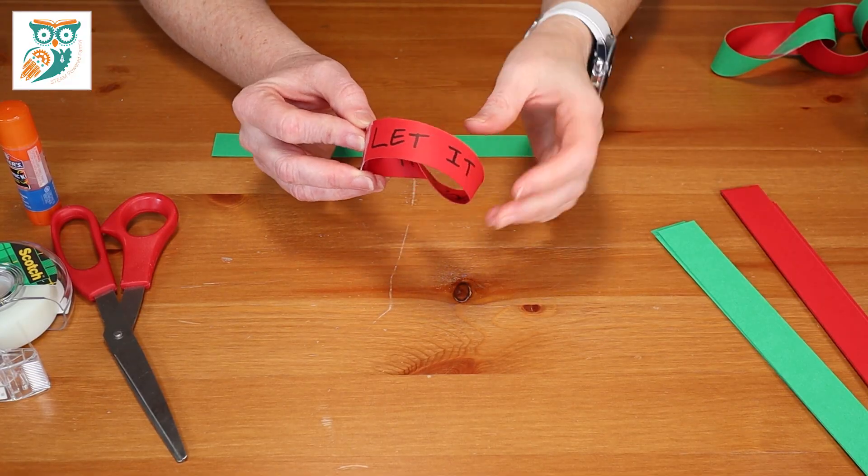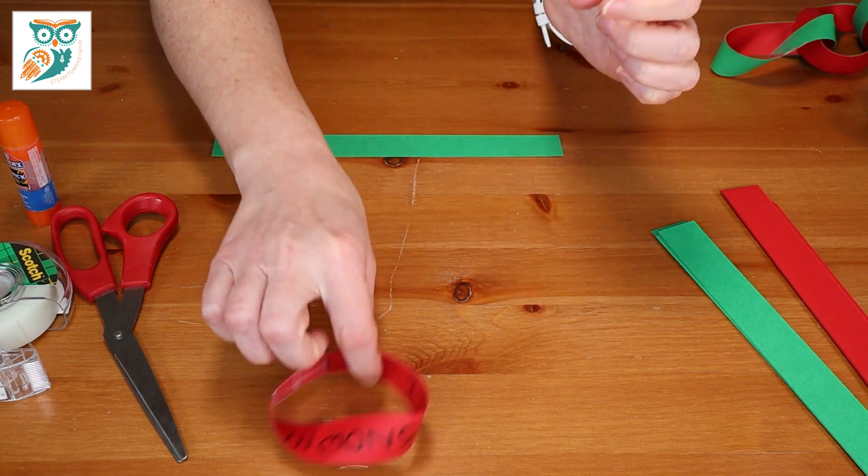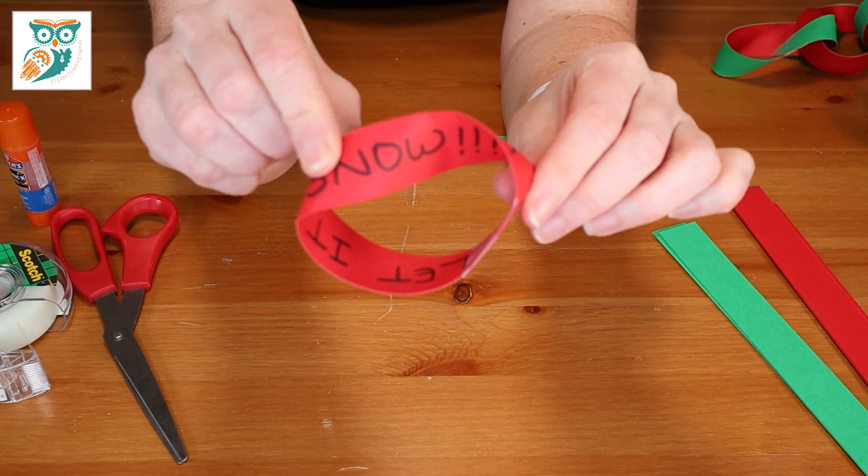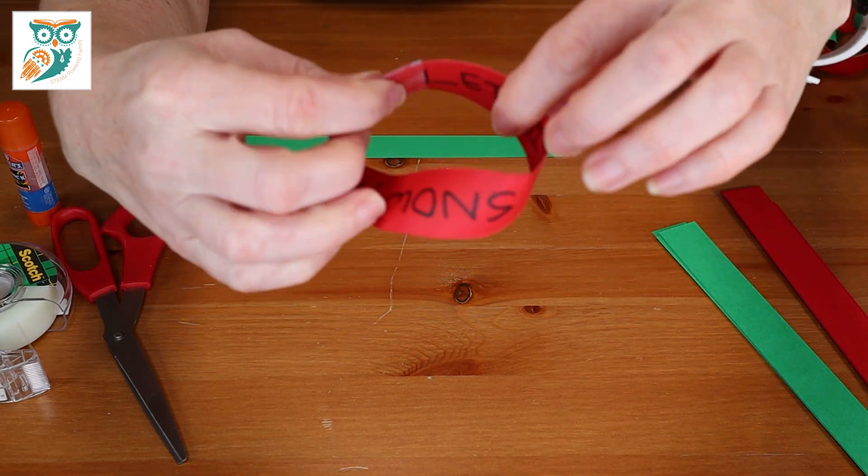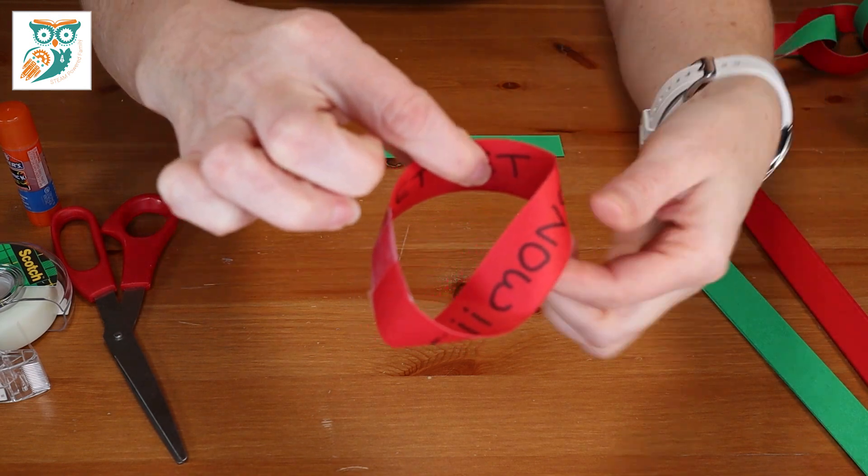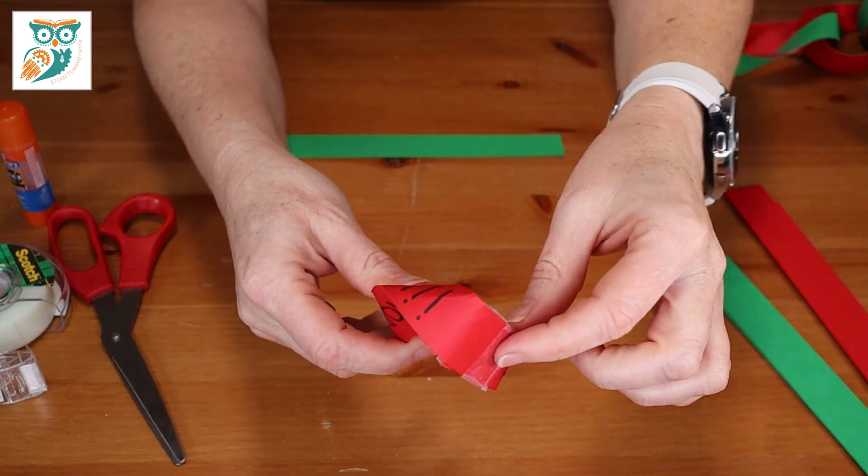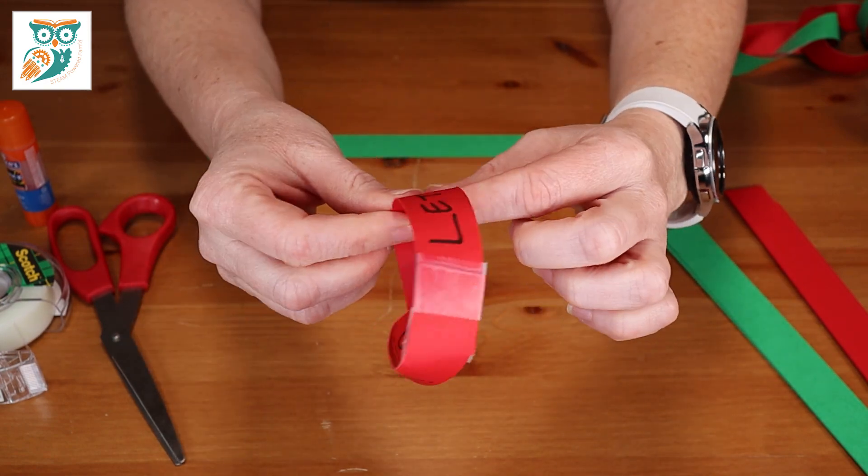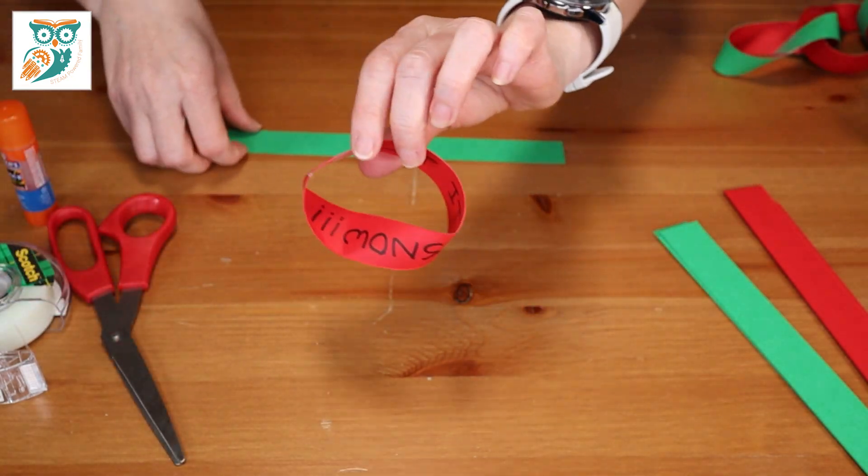Okay, we're going to start by making this one. So this is our little ornament that says let it snow. And if you follow it all the way around, I'm going to try and show you here. Even on the inside, right, my finger, you just keep on going. And it's a never ending loop. And you could just keep reading, let it snow, let it snow, let it snow. Okay, so that's what we're going to make. And it's a Mobius Strip.